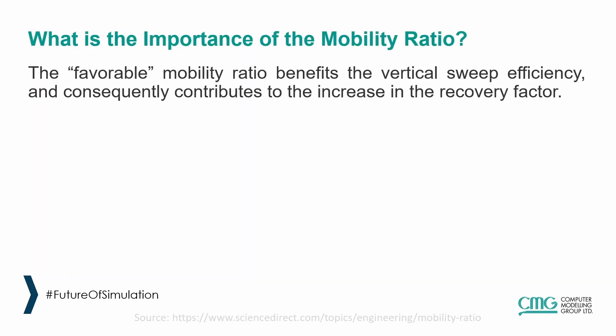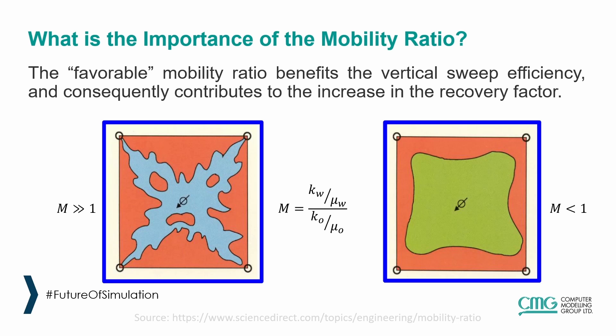However, to ensure an effective polymer flooding, the mobility ratio, normally called M, needs to be less than 1, since higher M values lead to viscous fingering and thus create conformance problems.